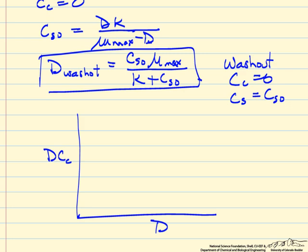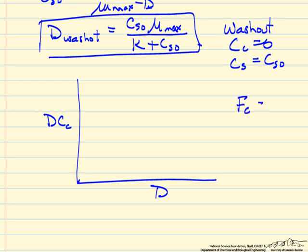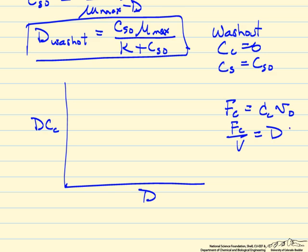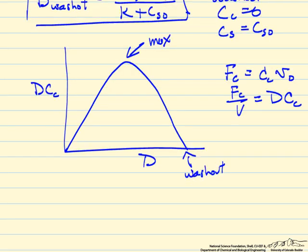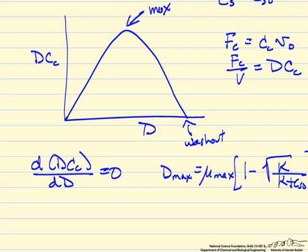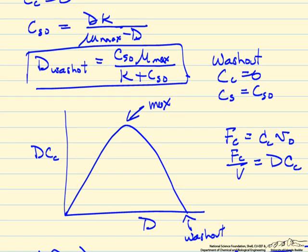The dilution rate times the cell concentration is an indication of how many cells we're making per reactor volume. If we write the flow rate of cells as the volumetric flow rate times the concentration, and express it per reactor volume, it's D times CC. Plotting this, we see there's some dilution rate at which we have a maximum cell production rate. We could calculate that maximum by taking the derivative and setting it equal to zero. At no flow rate we have no production; we get the maximum at an optimal dilution rate, and at a high enough dilution rate we have washout and no cell formation.